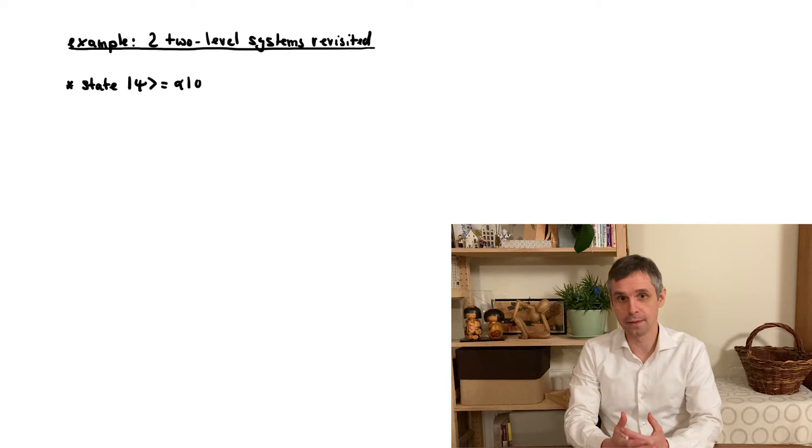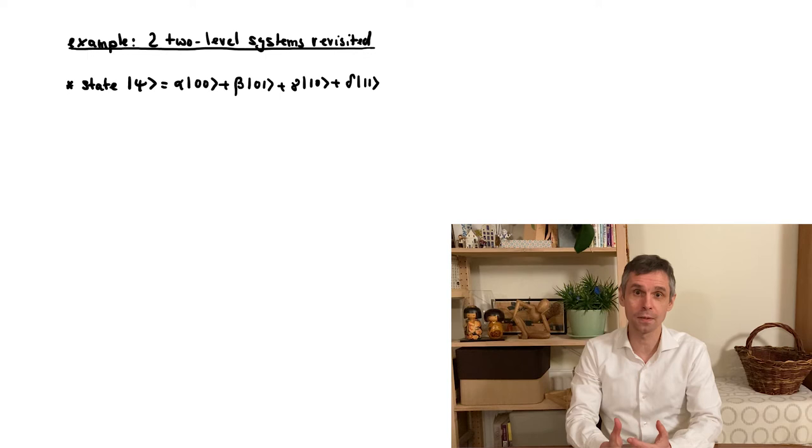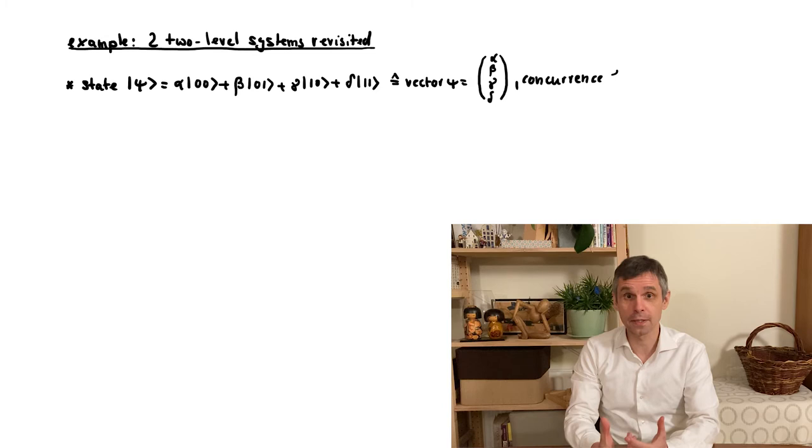the quantum state of such a system would be written in the Dirac notation, as we have established before, as a superposition of basis states that account for all the combinations of the states in the parts. And we can interpret this also as a vector with four components alpha, beta, gamma and delta. As a reminder, we also introduced a measure that tells us if such a state is separable or entangled, the concurrence as replicated here.